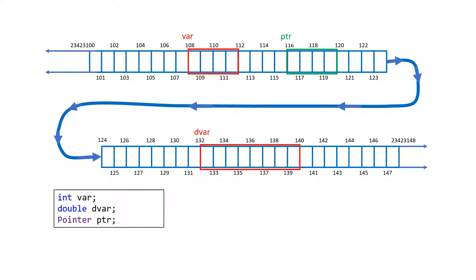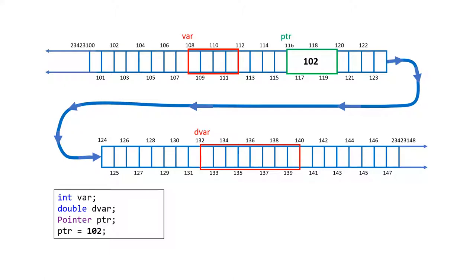A pointer 'ptr' is an integer — it's going to take four bytes like any other variable, it will be somewhere in memory, and it will be tagged with its variable name. You can set it to a value like a regular integer, so you can say ptr is 102, and 102 gets injected into ptr.